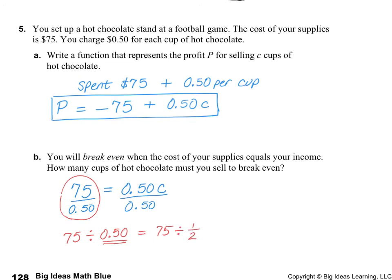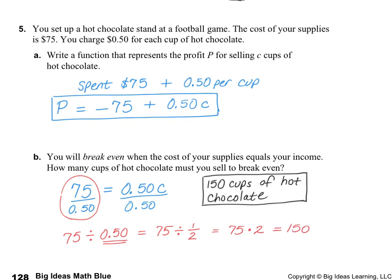So I'm going to change it to a fraction. If you remember keep, change, flip — we're going to do that here. I'm going to keep my $75, change it to multiplication, and flip the fraction. So it's 2 over 1, which is the same as 2. $75 times 2 is $150. So that means that we need to sell 150 cups of hot chocolate in order to get to the break-even point.